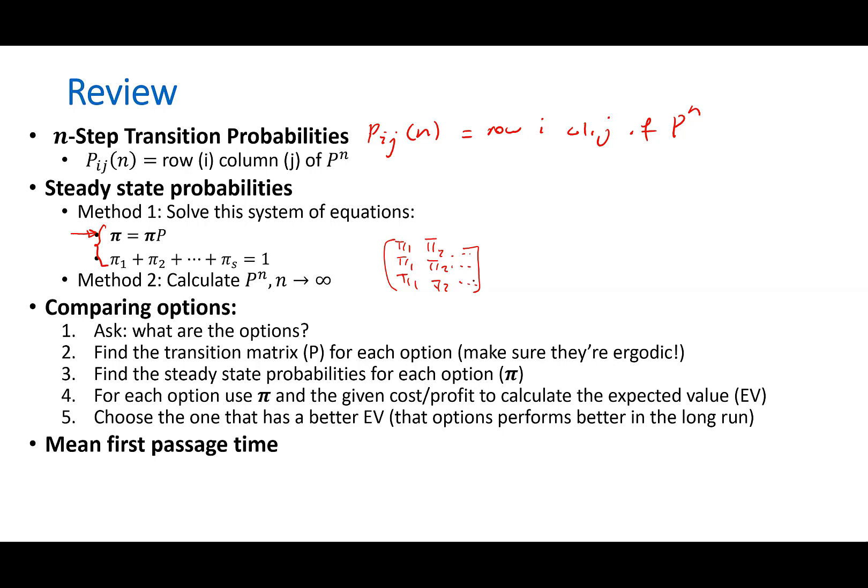And then we talked about mean first passage times, the expected number of steps before going from one state to another. And we showed that the formula is 1 over pi i, if you're talking about going back to a state, going back to itself, or 1 plus summation of pi k to j. So, if this is i, j, and in between it first goes to k, then goes from k to j. So, we talked about all of it.